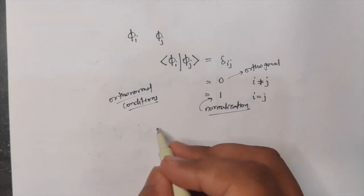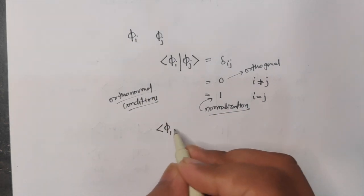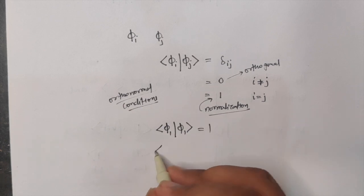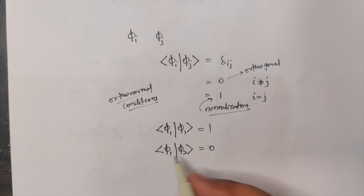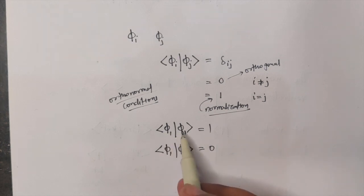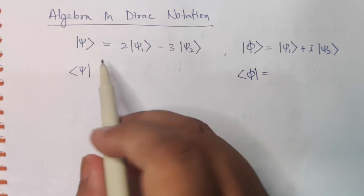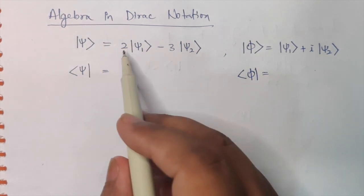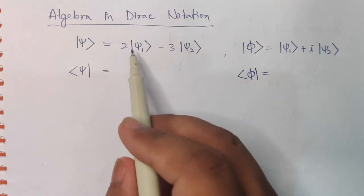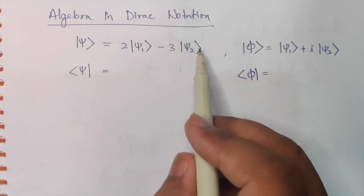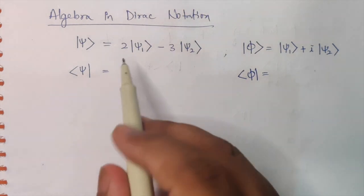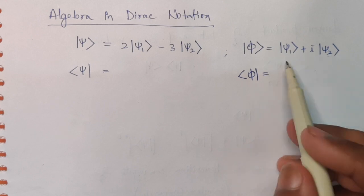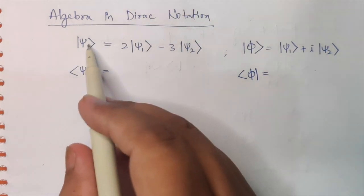So basically: bra-Phi-1 ket-Phi-1 equals one, and bra-Phi-1 ket-Phi-2 equals zero. Two different wave functions in bra-ket form give zero; the same wave function in bra-ket form gives one. Now let's check out some algebra in the Dirac notation. Let's say Psi is a combination: 2·Psi-1 minus 3·Psi-2. And Phi is also a combination of the same basis: Psi-1 plus i·Psi-2.